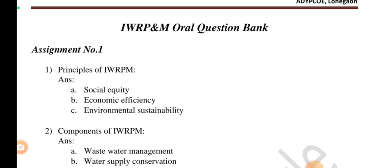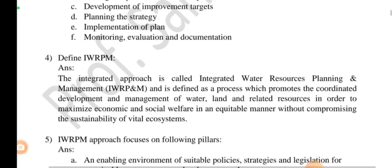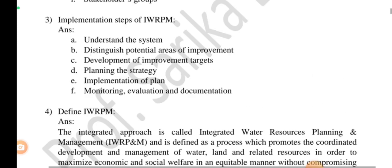Let's start. In IWRPM, first of all we will discuss what is meant by IWRPM. IWRPM is defined as Integrated Water Resources Planning and Management. It is the process of promoting and coordinating the development and management of available resources — such as water, land, and related resources — to maximize ecosystem and social welfare in an equitable manner, but without compromising sustainability, meaning without disturbing aquatic life.